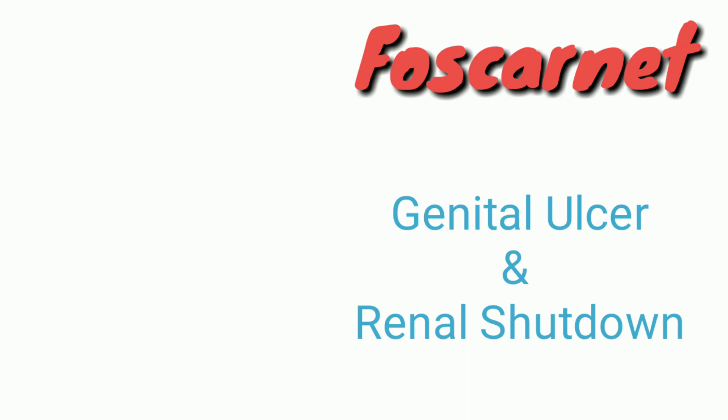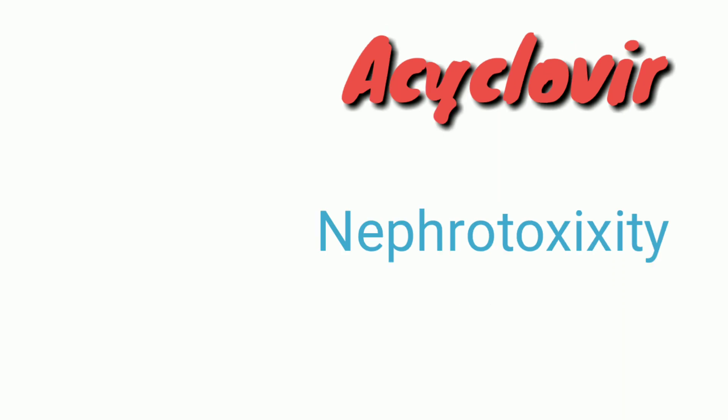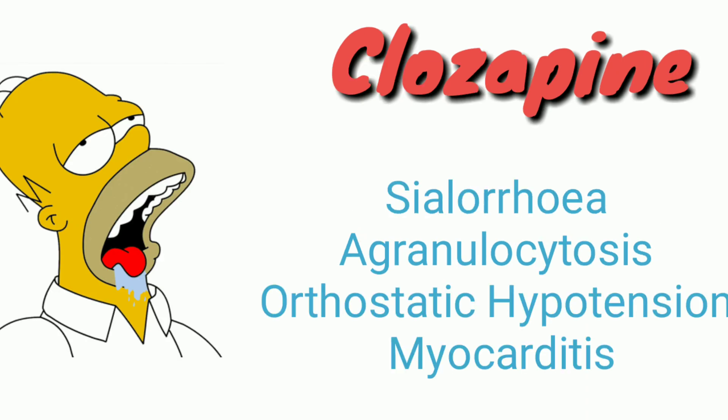Foscarnet causes genital ulcers and renal shutdown. Acyclovir causes nephrotoxicity in adults as well as younger people. Clozapine causes agranulocytosis, orthostatic hypotension, and myocarditis.